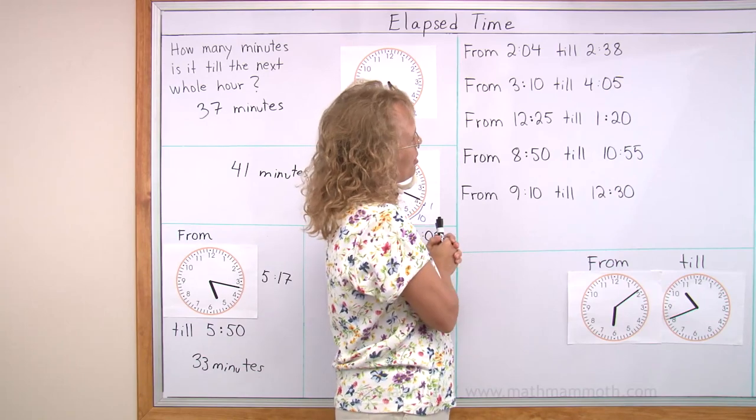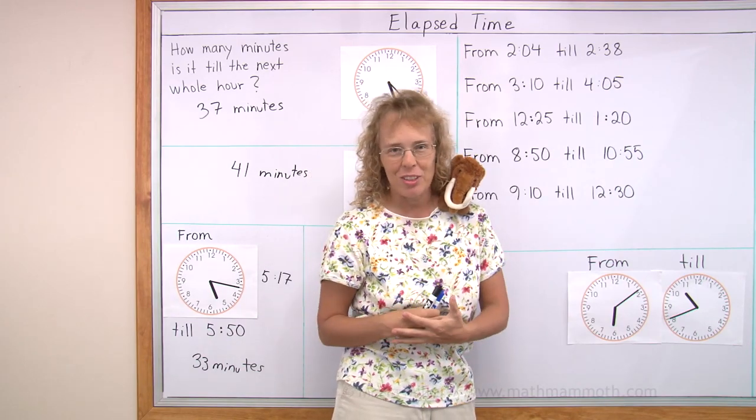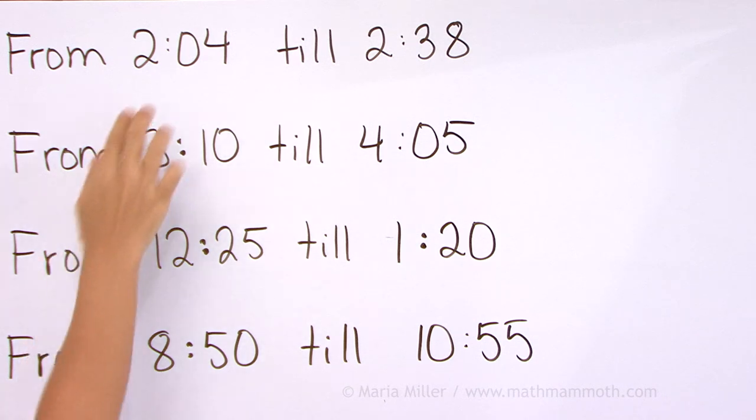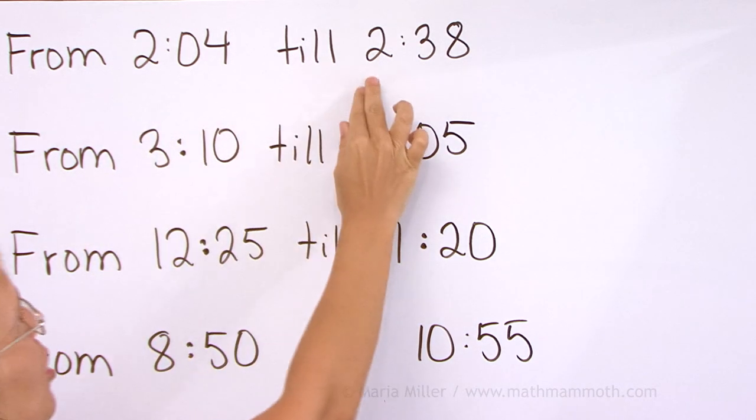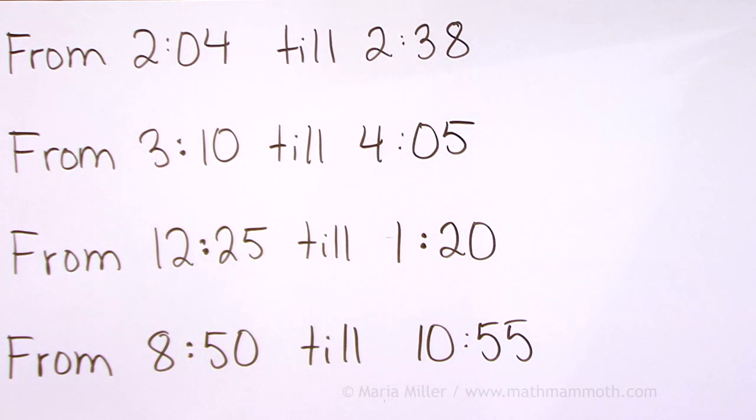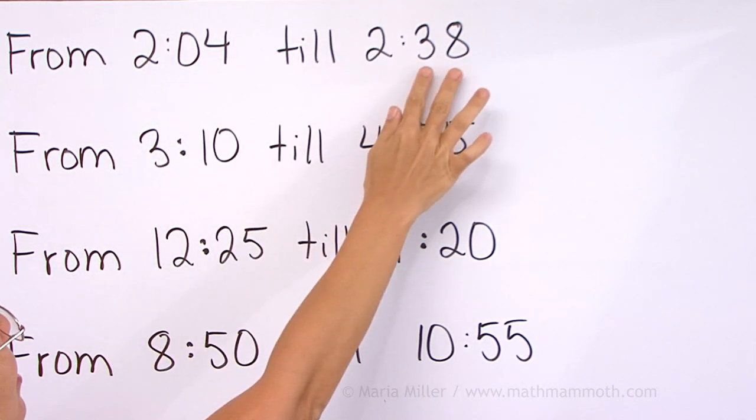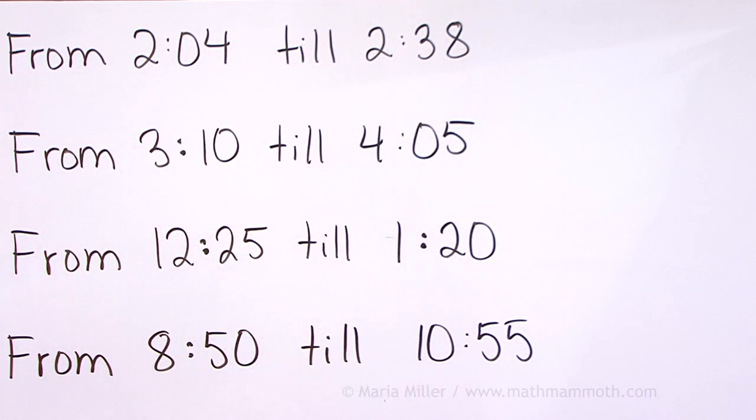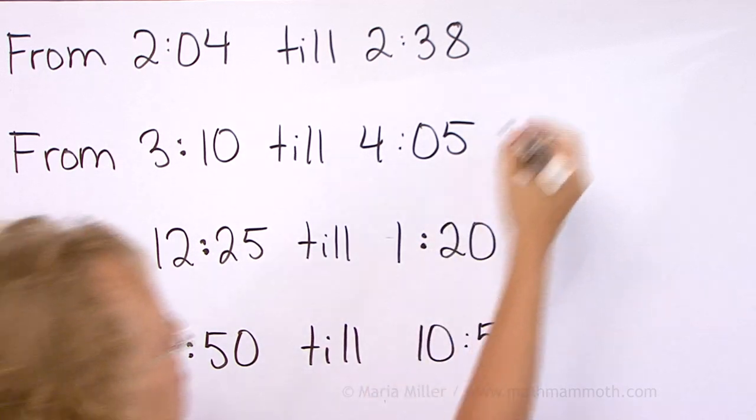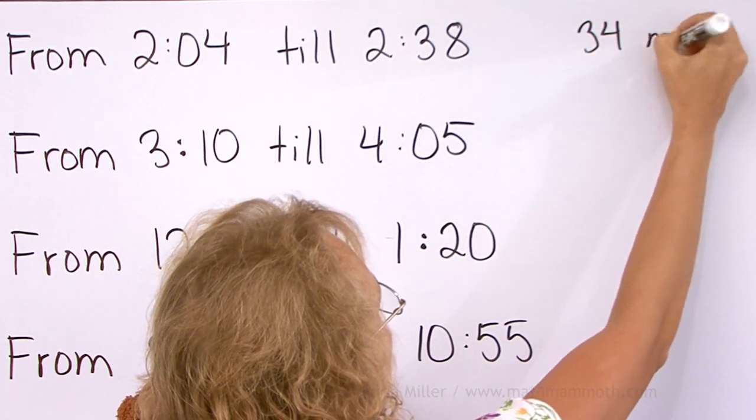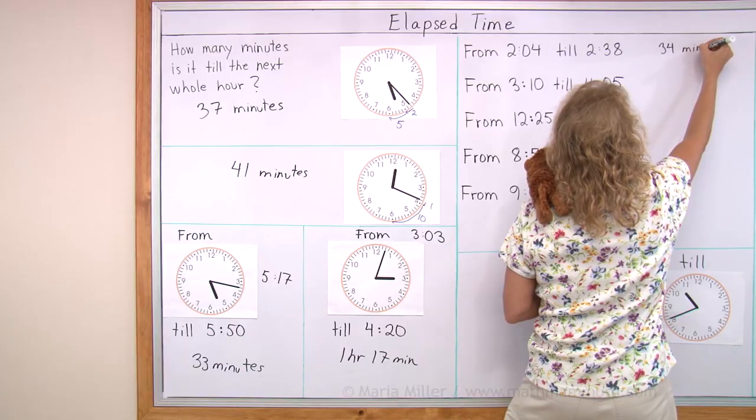Now here we don't have the clock anymore. We just have the times given to us. But still, how much time passes from 2:04 till 2:38? That one is pretty easy because the hours are the same. Two hours, two hours. So all we need to do is subtract the minutes. 38 minus 4. So we get 34 minutes.